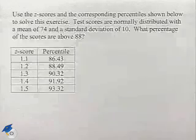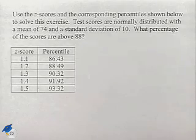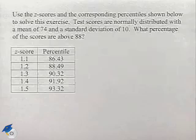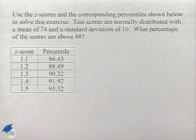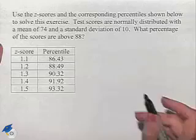Now let's look at another problem where we're going to be working with a normal distribution and percentages associated with it. Use the Z-scores and the corresponding percentiles shown below to solve this exercise. Test scores are normally distributed with a mean of 74 and a standard deviation of 10. What percentage of the scores are above 88?